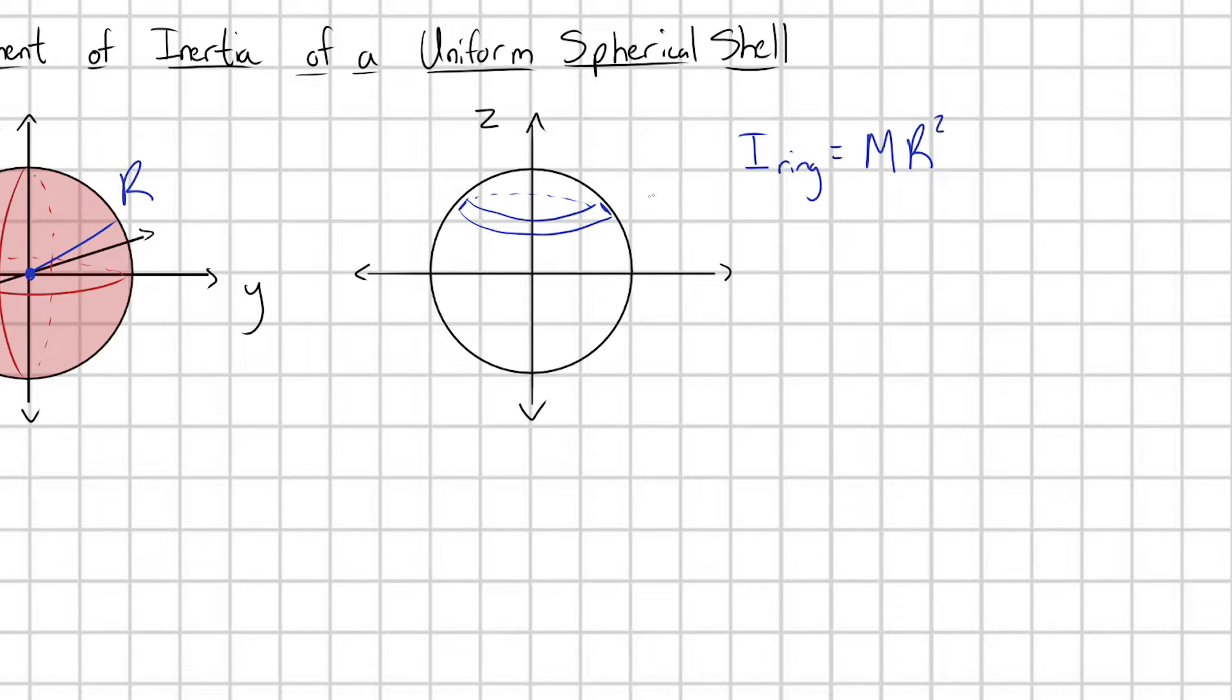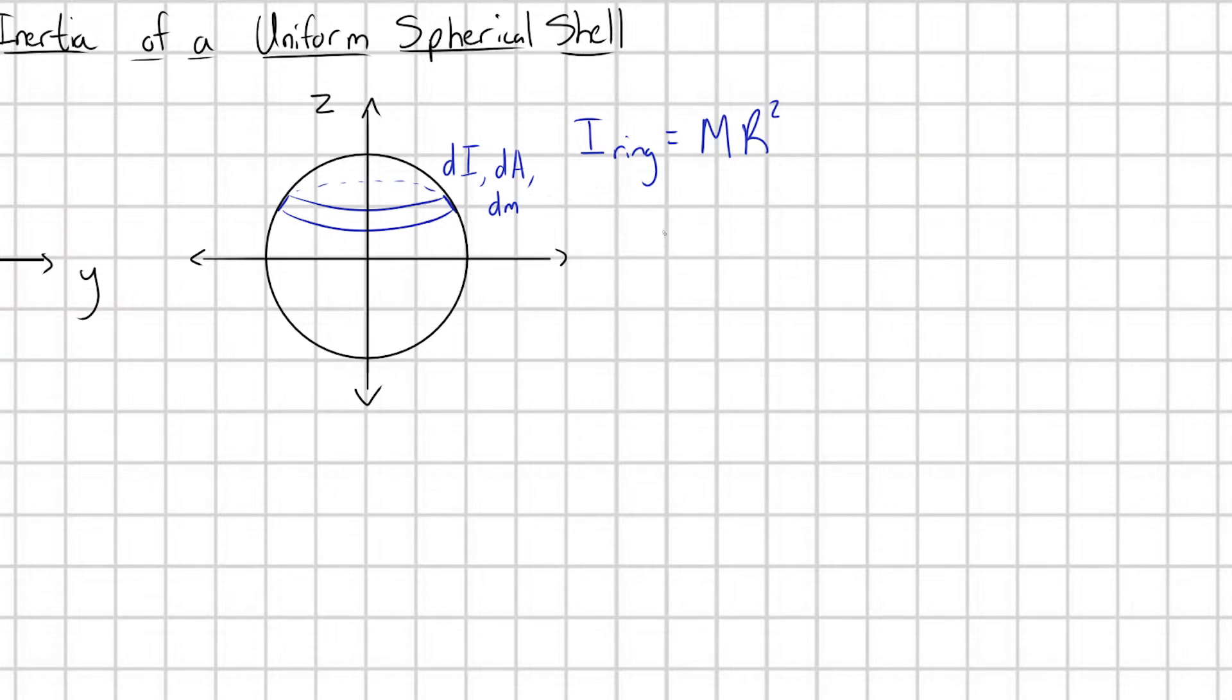And we proved this in another video on this channel. So we're going to exploit this fact in order to make this calculation substantially easier. Let's start by recognizing that the total moment of inertia of my sphere, I, is going to be equal to just the sum over this sphere of all these infinitesimal inertia elements, dI.